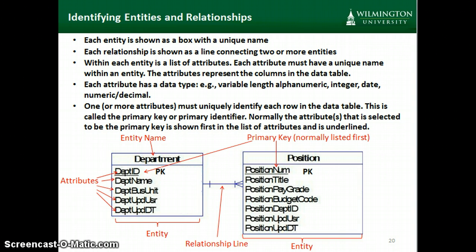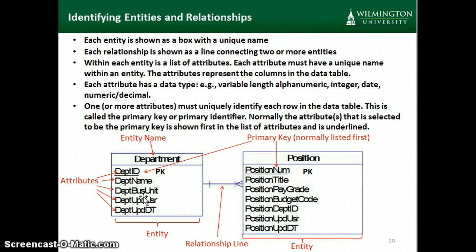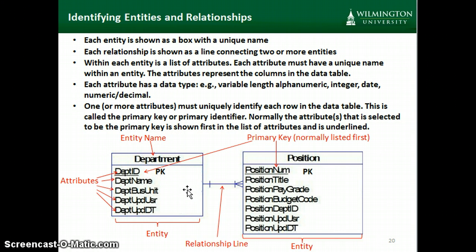As we're doing our diagramming, an entity is a person, place, thing, or event, and it's drawn in a box with a unique name. The relationship is drawn as a line connecting two or more entities. Within each entity, the columns in our table are listed on individual lines within the box. The primary key by convention is normally listed first. Each attribute will have some sort of data type, although they're not shown in this example. In this example, we have one attribute — department ID for department and position number for position.